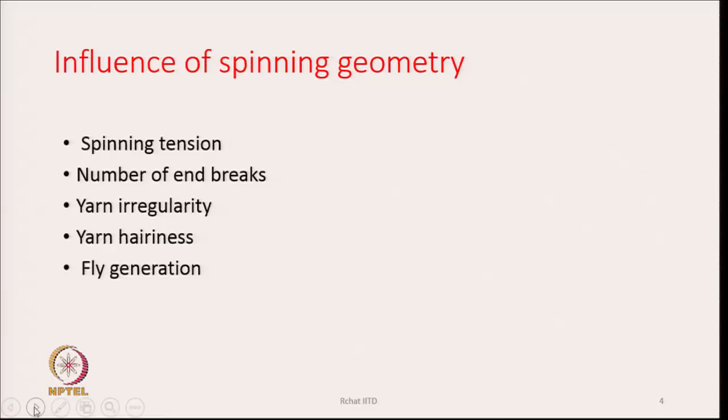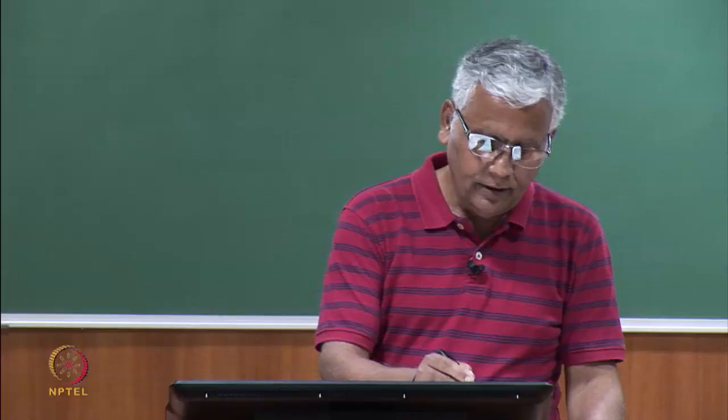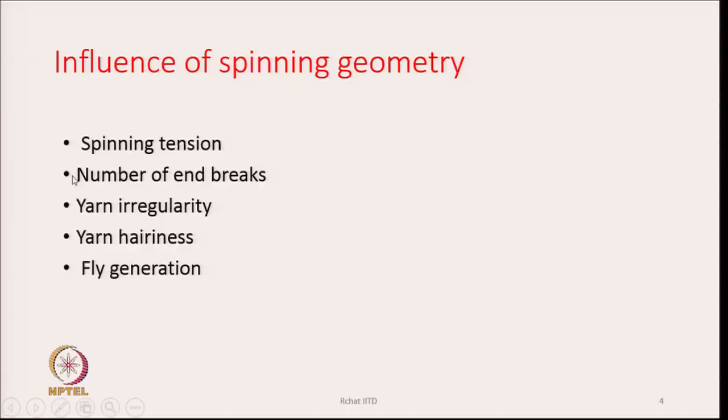Moving to the influence of spinning geometry: it influences spinning tension, number of end breaks — that is the number of times the thread is going to break. It also affects the irregularity of the yarn, basically mass irregularity. It can affect the hairiness of the yarn and also the generation of fly. So many factors are affected by spinning geometry.